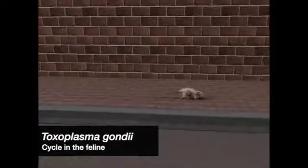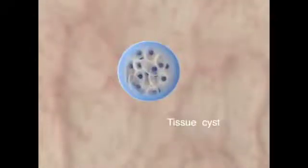This mouse is infected with toxoplasma cysts. On preying it, the cat will also become infected. The infective parasites are inside the tissue cysts, present mainly in the muscles and brain of the animal.